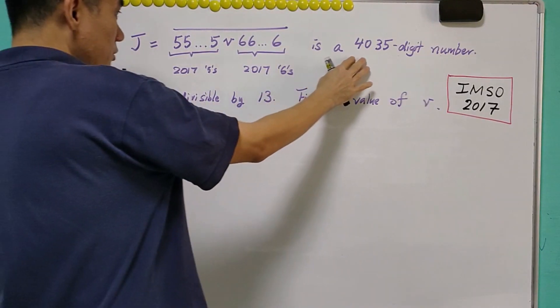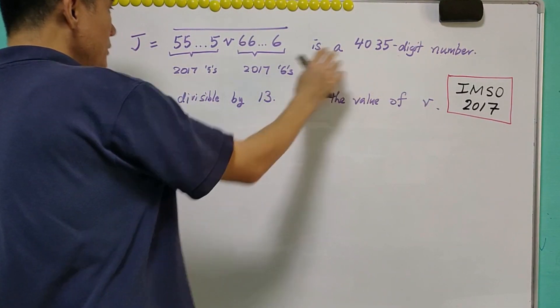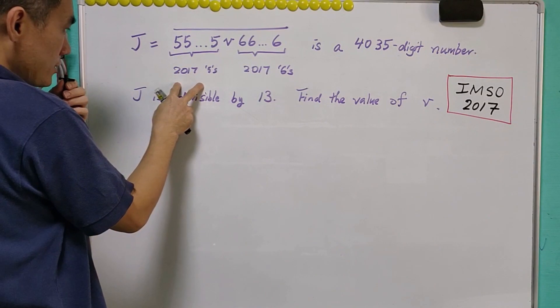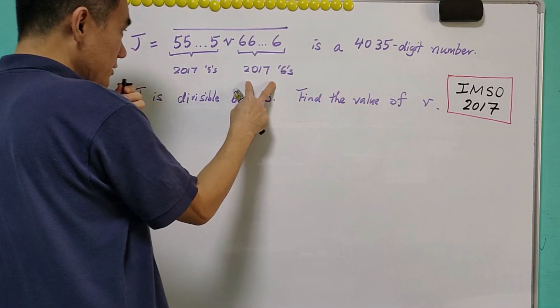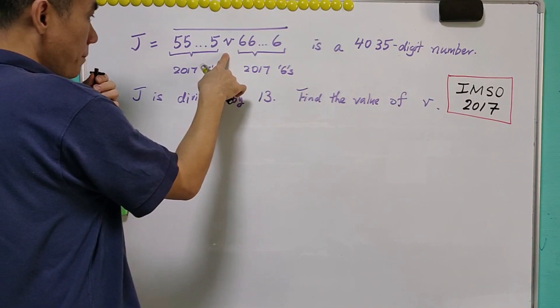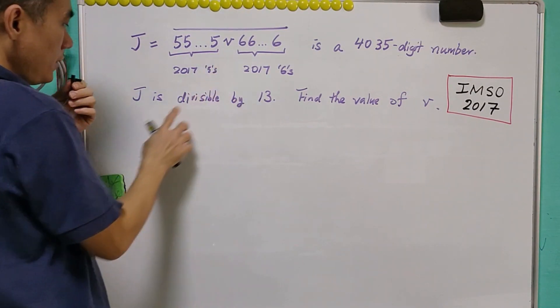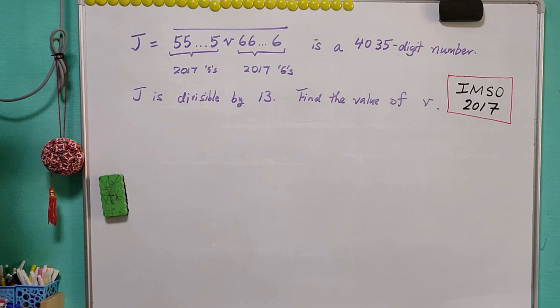Given that J is a 4035-digit number, where the first 2017 digits are 5 and the last 2017 digits are 6, what will be the middle digit V if J is divisible by 13?